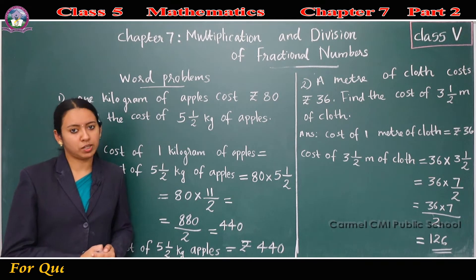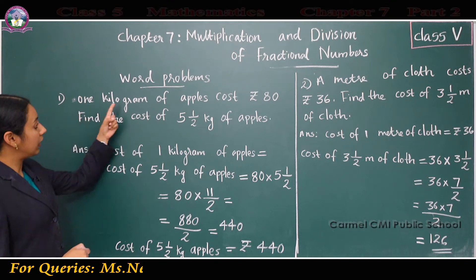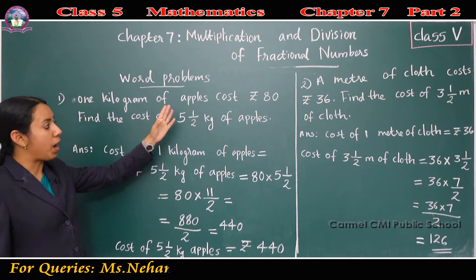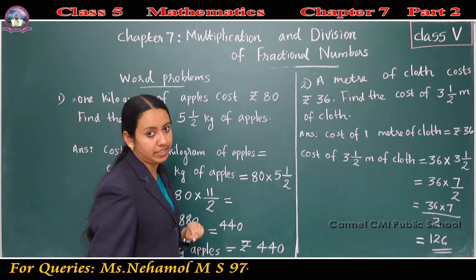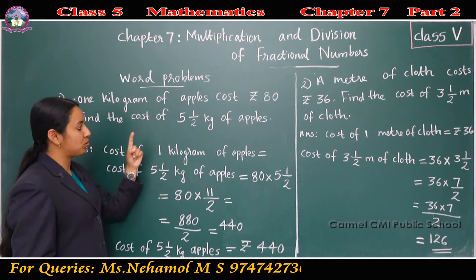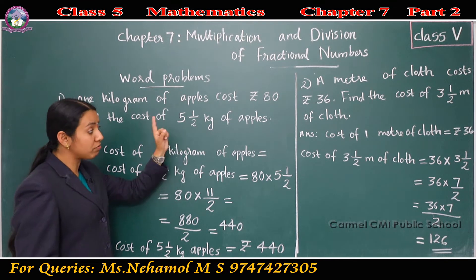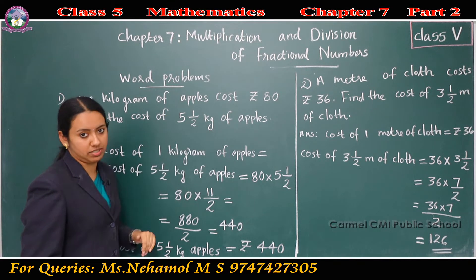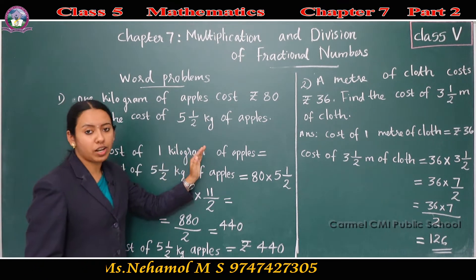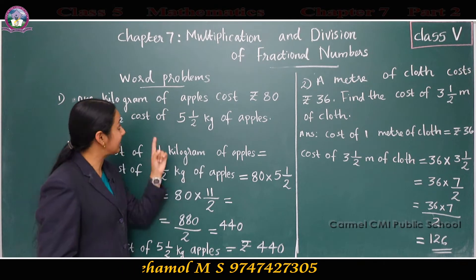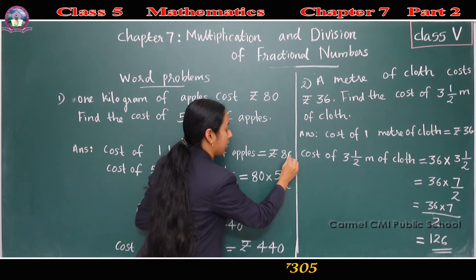Now, we can go through some word problems. First one: 1 kilogram of apples costs rupees 80. Find the cost of 5½ kilograms of apples. What is given? The cost of 1 kilogram of apples is rupees 80.